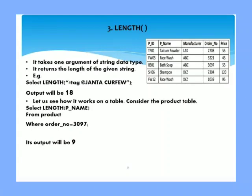Now let us discuss function LENGTH. LENGTH is a single row string function and it takes one argument of string data type. It returns the length of a given string. For example, select length hashtag space at the rate JANTA space CURFEW. Now what it will return is number of characters in this given length. Space is also a character. Hash and at the rate, they are also characters. So how many characters are there including spaces? They are 18, so output will be 18.